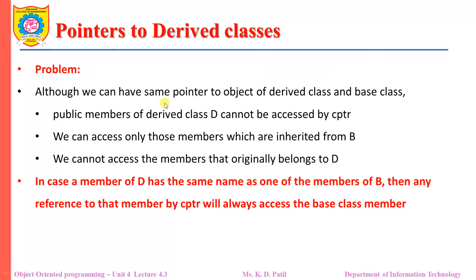Although we can have the same pointer point to the object of the derived class and the base class, public members of the derived class D cannot be accessed by CPTR, as CPTR is the pointer variable created of type class B. We can only access those members which are inherited from class B. We cannot access the members which originally belong to class D.